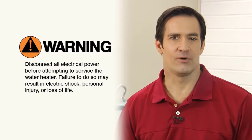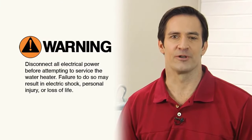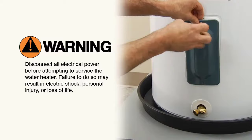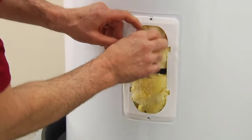First, turn the power off to the water heater at the circuit breaker. Then remove the cover panel and insulation to expose the thermostat.